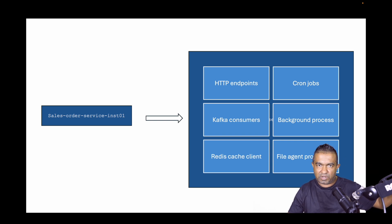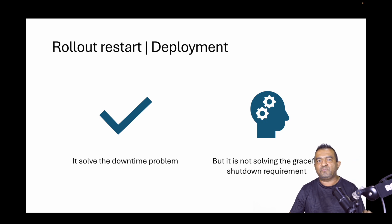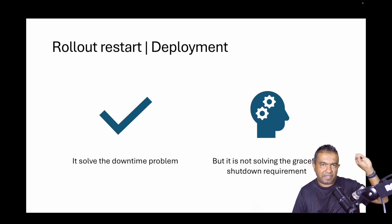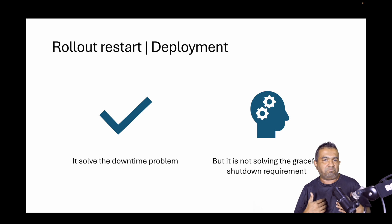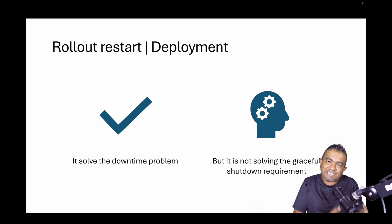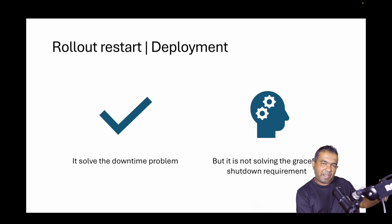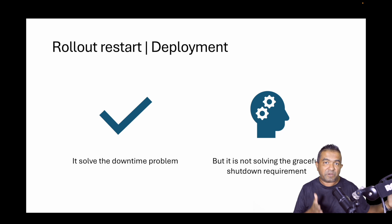Rollout restart solves the downtime problem — at any given time at least one instance is guaranteed to be up and running. But it doesn't solve the graceful shutdown problem. Let's say I am an instance and Kubernetes says 'I'm going to deploy a new version, you go home.' I'm in the middle of something — I need time to finish my work. For example, I'm inserting 1000 records to a database and I'm currently at 500. If Kubernetes kills me right there, the other 500 records will be completely lost. That is why rollout restart alone doesn't solve our problem.